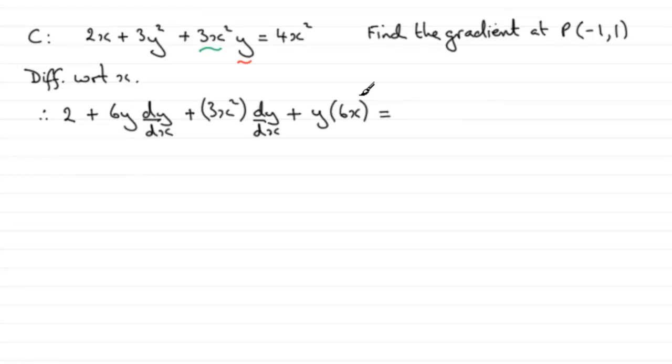Then we've got to differentiate the 4x squared with respect to x. So that's just going to be 8x.